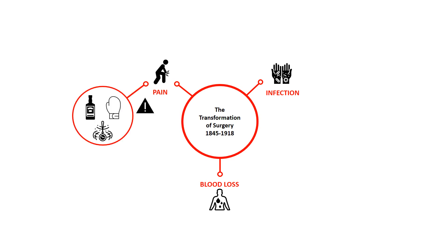Pain was a problem for surgeons, especially because their patients could die from the trauma of extreme pain. Natural drugs such as alcohol, opium and mandrake had long been used, but effective anaesthetics that didn't make the patient very ill were more difficult to produce. Often they would also use hypnosis and knocking the patient out. Nitrous oxide, or laughing gas, was identified as a possible anaesthetic by British chemist Humphrey Davy in 1799, but he was ignored by surgeons at the time.